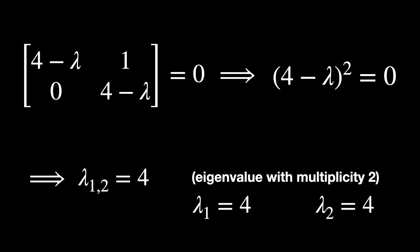But this time we will find only one eigenvalue, 4, which appears twice, so it has multiplicity 2. We can say that lambda 1 and lambda 2 are 4.